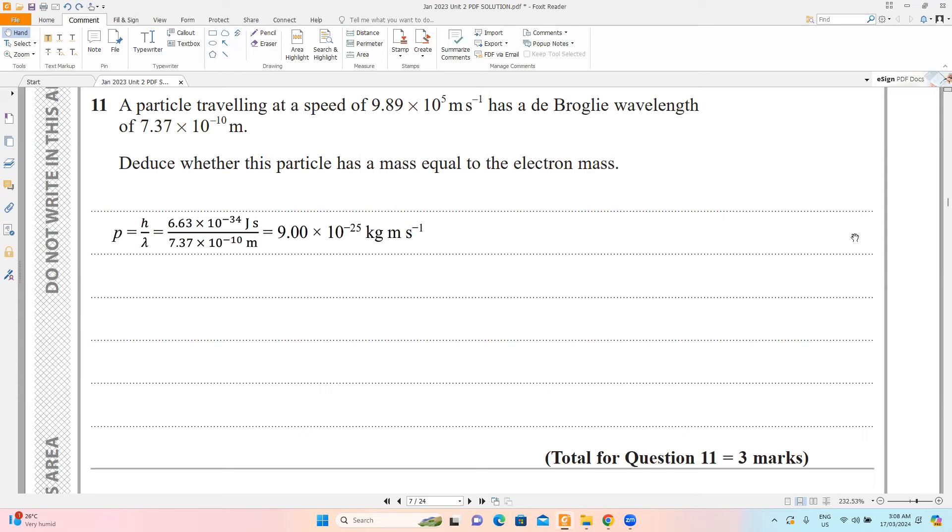So h is Planck's constant divided by lambda—I already have the value of lambda. So I get the momentum, and we all know momentum equals mass times velocity.